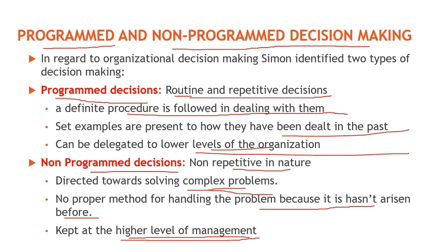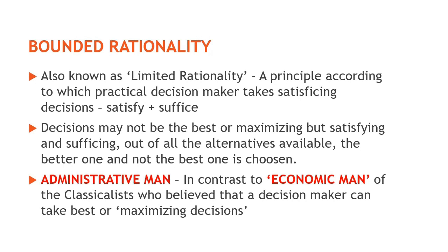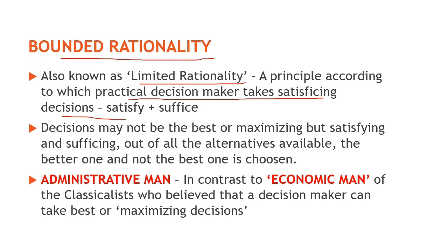Herbert Simon ne decision making ka ek model diya tha jise kaha jata hai bounded rationality. Is model ko limited rationality bhi kaha jata hai. Rationality ka matlab hota hai tarkikta, aur limited rationality ka matlab hai seemit tarkikta. It is a principle according to which a practical decision maker takes satisficing decisions. Satisficing word angrezi ke do shabdon — satisfy aur suffice — se milkar bana hai, aur iska Hindi mein matlab hota hai santoshjanak.